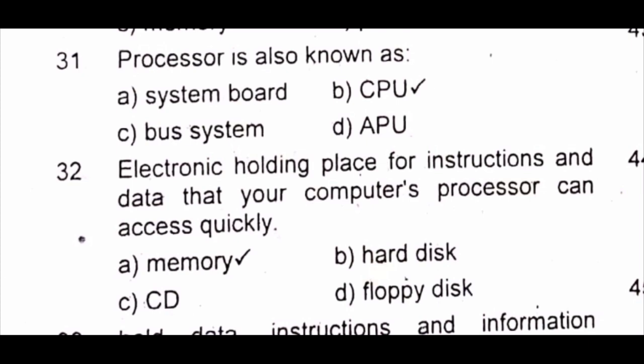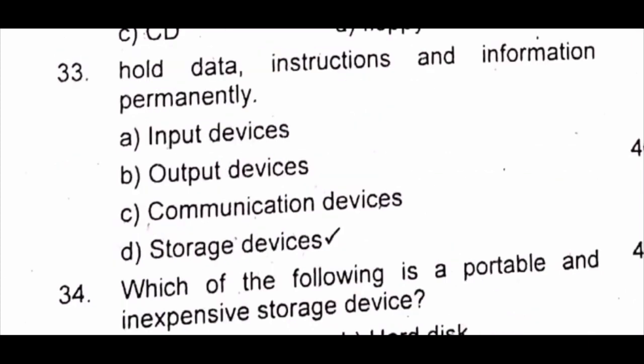The answer is B) CPU. Question 32: Electronic holding place for instructions and data that your computer processor can access quickly. A) memory B) hard disk C) CD D) floppy disk. The answer is A) memory. Question 33: All data, instructions and information are stored permanently in A) input devices B) output devices C) communication devices D) storage devices. The answer is D) storage devices.